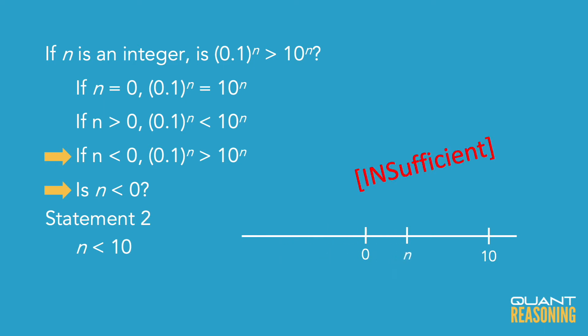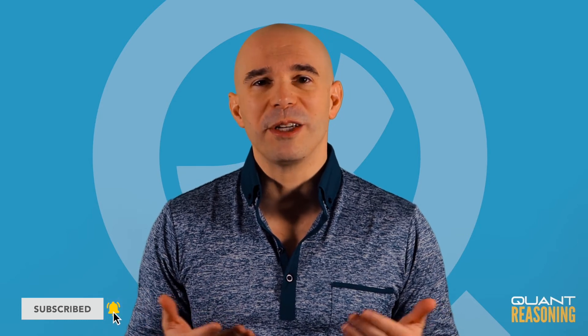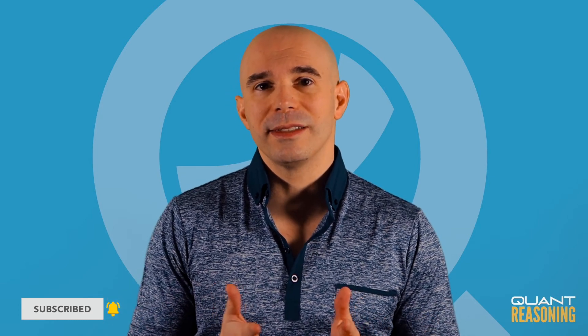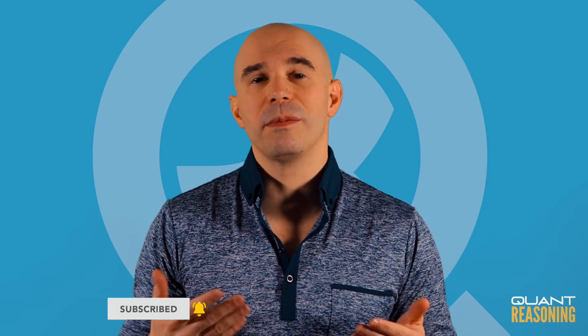So we do have to combine the statements in this case because neither statement is sufficient on its own. And when we combine them, we still don't know which side of 0 n is on. It's somewhere between negative 9 and positive 9.